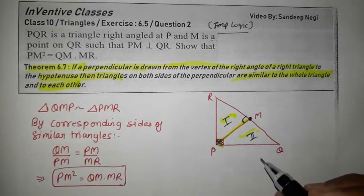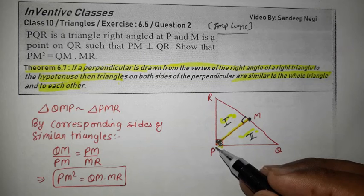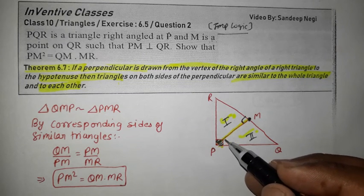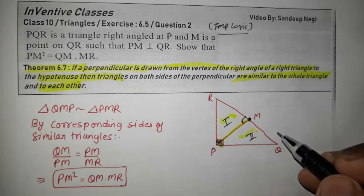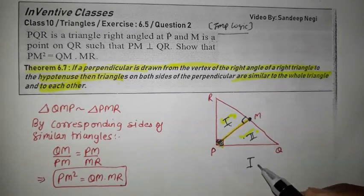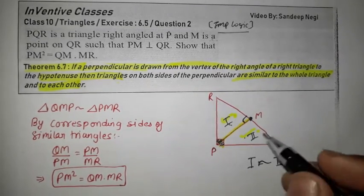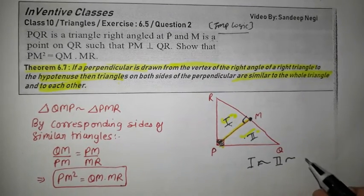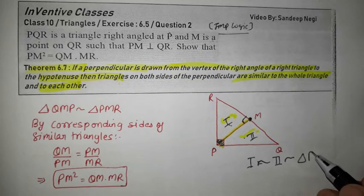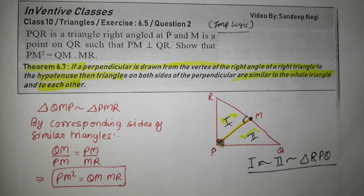If 90 degrees is at a vertex and perpendicular to hypotenuse is drawn, then these two triangles will be similar, and these two triangles will be similar to the whole triangle. So this is your theorem which you will use.